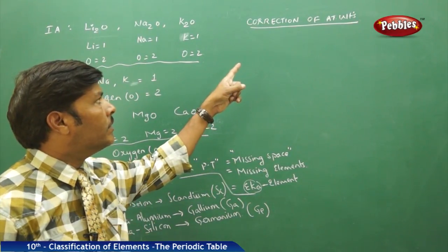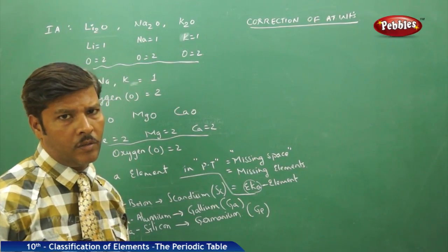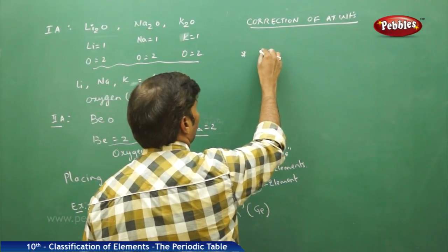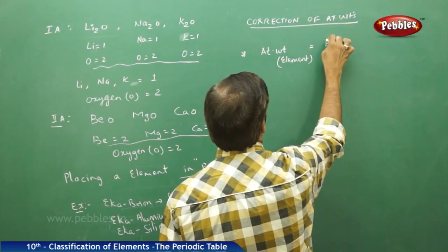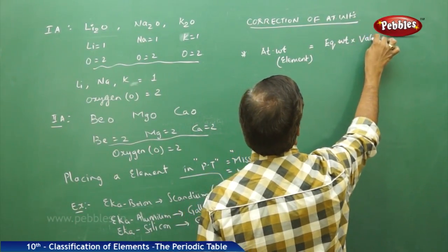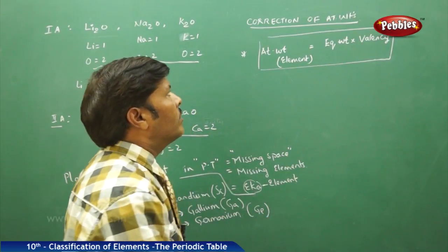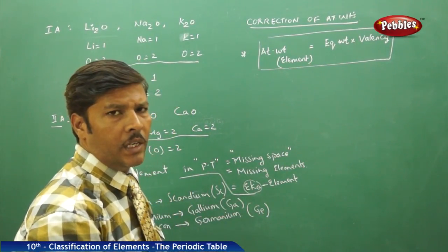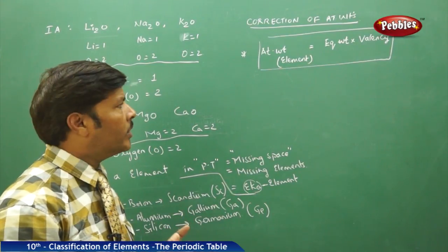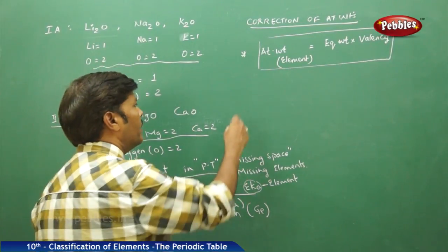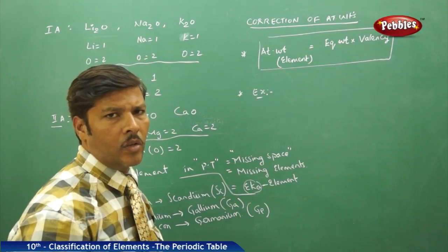The next part of the discussion is the correction of atomic weights. To give the proper position of elements in the periodic table, Mendeleev successfully used the formula: atomic weight of any element equals equivalent weight multiplied by valency. Using this formula, Mendeleev could correct atomic weights experimentally and give the proper position for each element in its respective group.